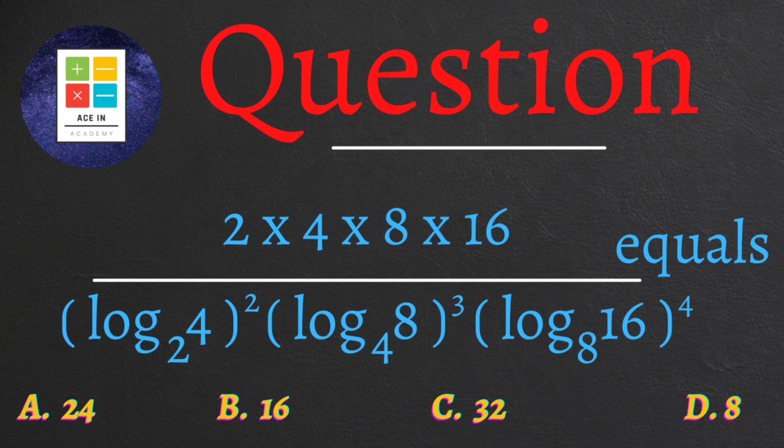Now the question is as follows: 2 × 4 × 8 × 16 divided by (log 4 base 2)² × (log 8 base 4)³ × (log 16 base 8)⁴ equals. So this was our question.